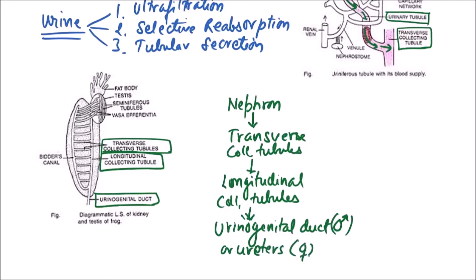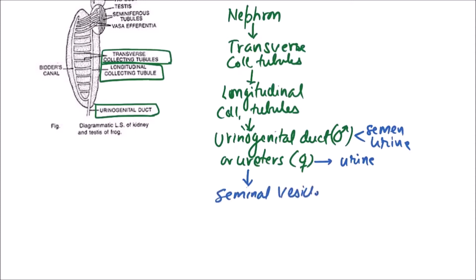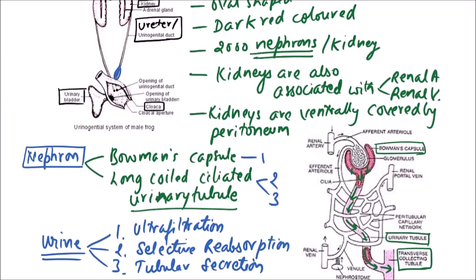Finally, the filtrate reaches the urinogenital duct in males, or simply the ureter in females. It is termed urinogenital duct in males because it carries both semen and urine, while the ureter in females carries urine only. Thereafter, the urine from the urinogenital duct moves into the seminal vesicle, which is a dilated portion of the urinogenital duct just before opening into the cloaca.